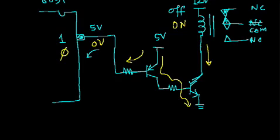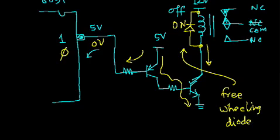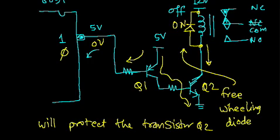Whenever the transistor becomes off — if the relay was on previously and current was flowing — when you make the transistor off, the sudden change in current causes the voltage at the collector to develop to a very high level, which may cause a problem to the transistor itself; the transistor may burn. So to avoid this we connect a diode called a freewheeling diode. This freewheeling diode will protect transistor Q2. This is Q2 and this is Q1. This is the circuit for connecting any port pin to a relay.